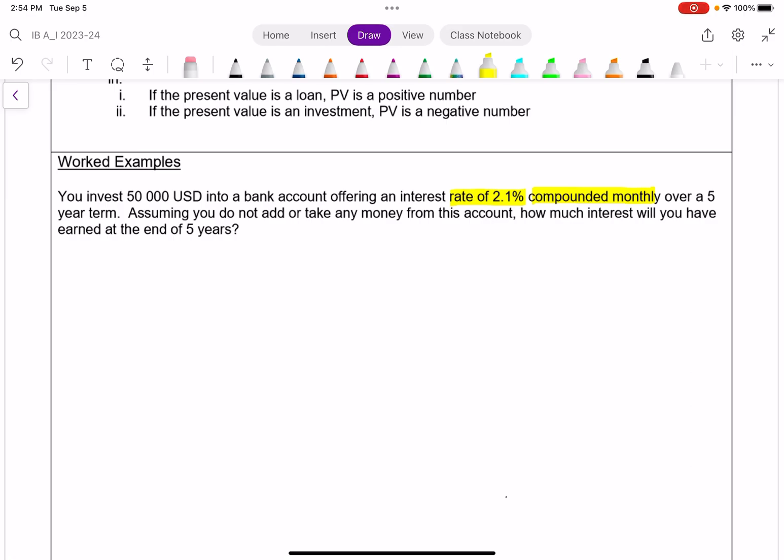But just keep in mind, when something's compounded anything other than yearly or annually, the percentage you see is being divided by how many compounding periods there are. In this case, it's growing over 5 years. Assuming you do not add or take any money out from the account, how much interest will you've earned after 5 years?